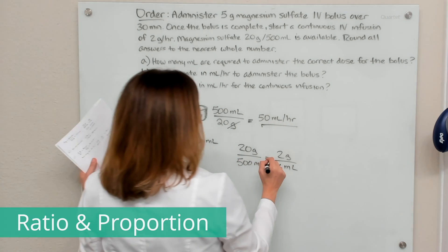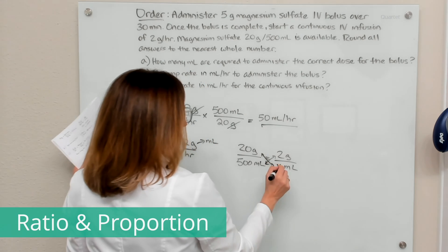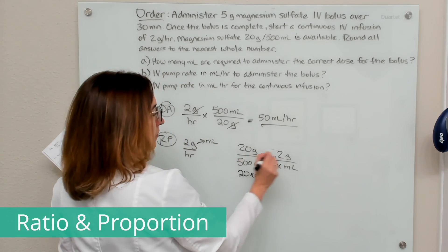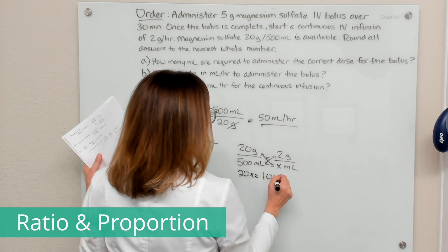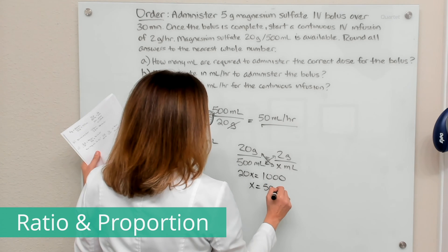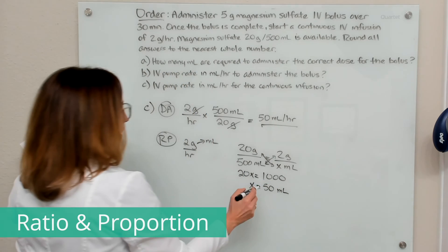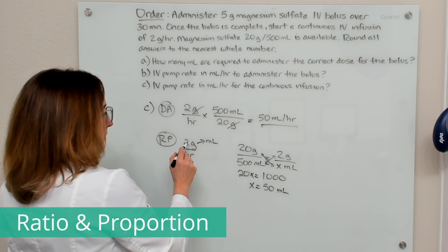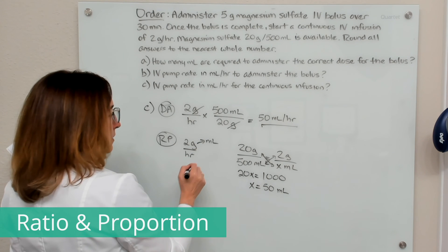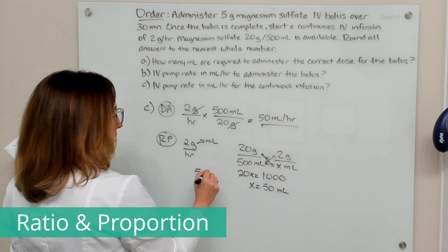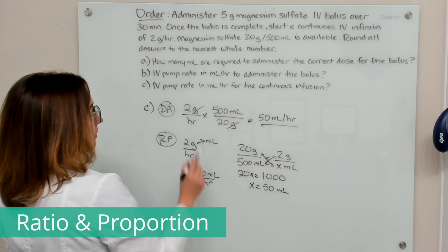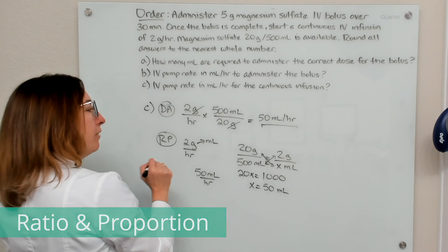We cross multiply: 20x equals 500 times two, which is 1000. Solving for x, we end up with 50 milliliters. So two grams is contained in 50 milliliters. If we want to give two grams per hour, that's going to be 50 milliliters per hour. That is the answer for part C using ratio and proportion.